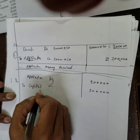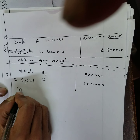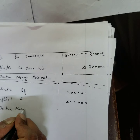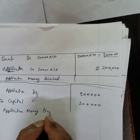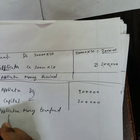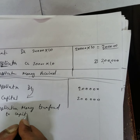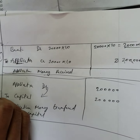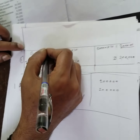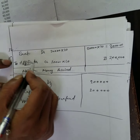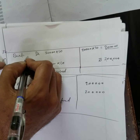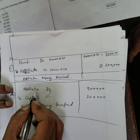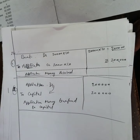Capital account has gained. So every account will have 2 entries. Application has 2 accounts: one where cash comes into the bank (application goes out, cash comes into the bank), and the same cash is then transferred to the capital account — that is, application transferred to capital account.